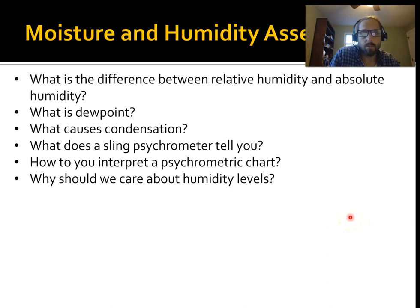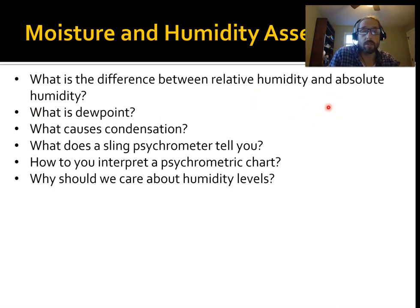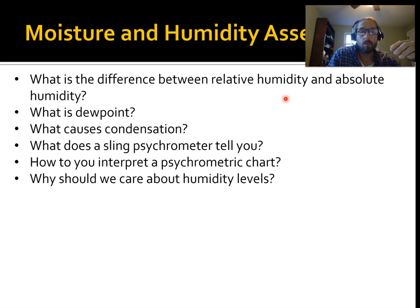Welcome to part two of the moisture and humidity assessment lesson. In the previous lesson we went over the difference between relative and absolute humidity. Absolute humidity is the actual amount of moisture, or water vapor, that's in the air. Relative humidity is the ratio of the absolute humidity to the maximum possible moisture that that air can hold at that temperature.